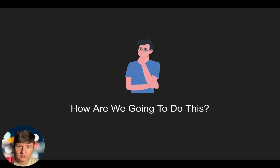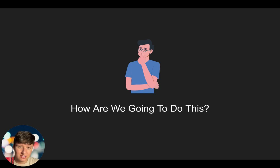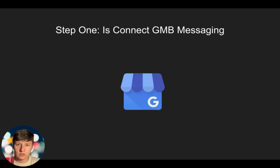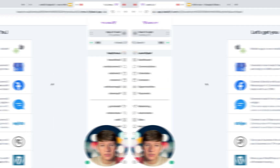Before we get started, you're going to want to make sure that the business owner has a Google My Business set up. They most likely do, but just in case they don't, you want to make sure they quickly set that up and verify their business. Once that's done we can start this process. Step one is going to be to connect their Google My Business messaging, so let's jump into GoHighLevel.